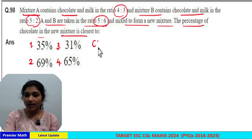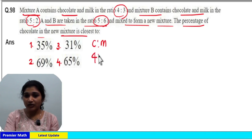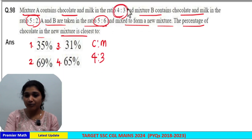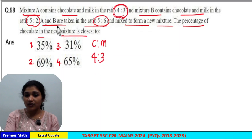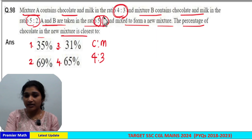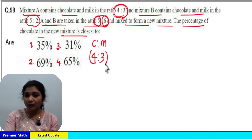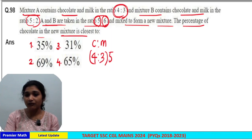Chocolate and milk in mixture A is in the ratio of 4 to 3. Even if you take just one drop from mixture A, that one drop will contain chocolate and milk in the ratio of 4 to 3. Here you are taking A and B in the ratio of 5 to 6, meaning you are taking 5 parts from A. So when you take out 5 parts from mixture A, multiply 4 to 3 by 5.